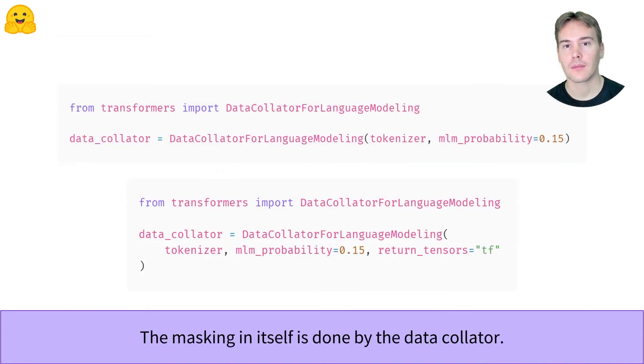Once this is done, the masking is the easy part, as there is a data collator designed specifically for this in the Transformers library. You can use it directly in the trainer, or when converting your dataset to TensorFlow datasets, before doing keras.fit with the to_tf_dataset method.